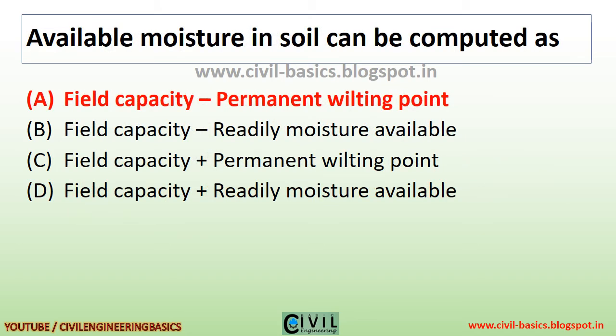Available moisture in soil can be computed as the field capacity minus the permanent wilting point.